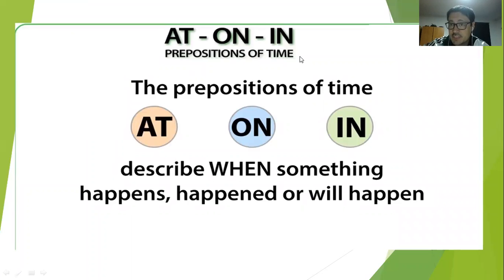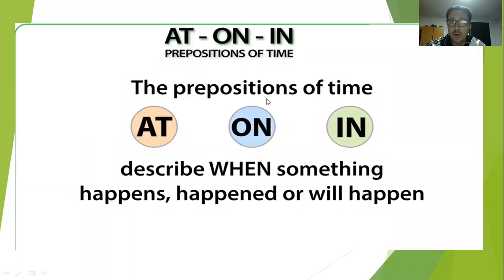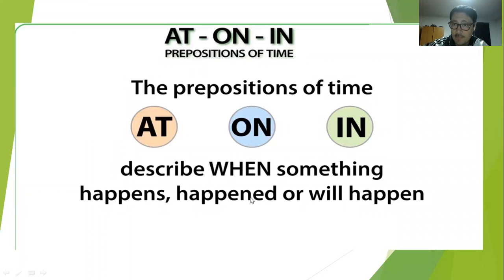What are prepositions of time? We have three: at, on, in. And when do we use them? To describe when something happens, happened, or will happen.